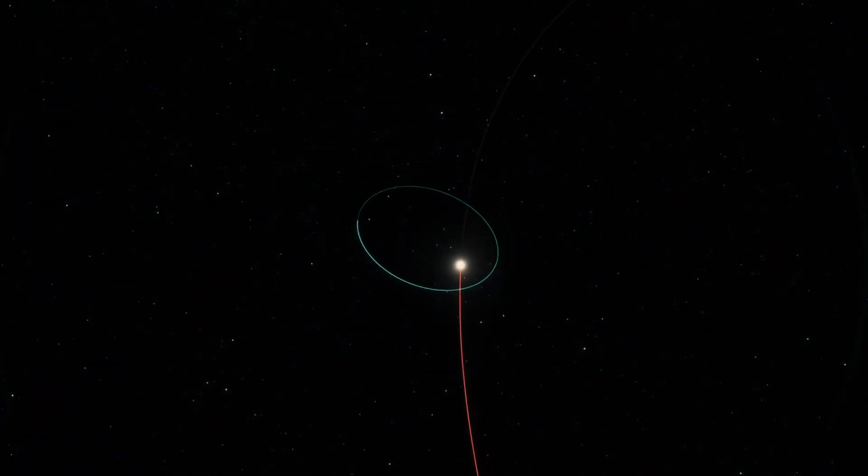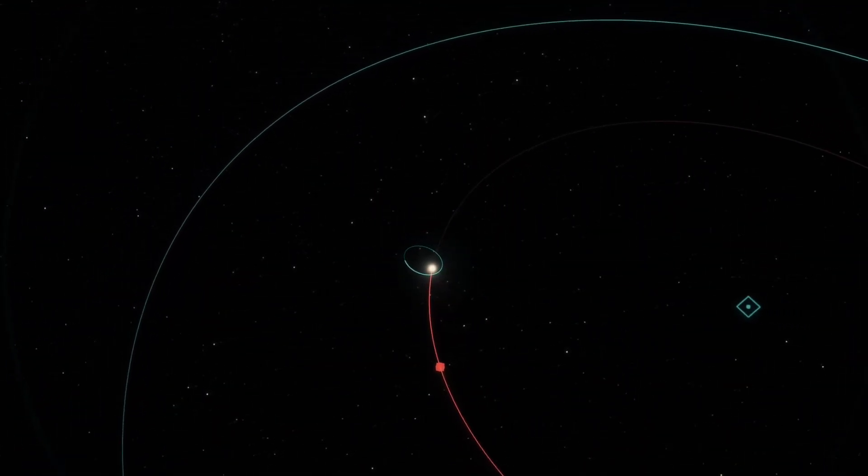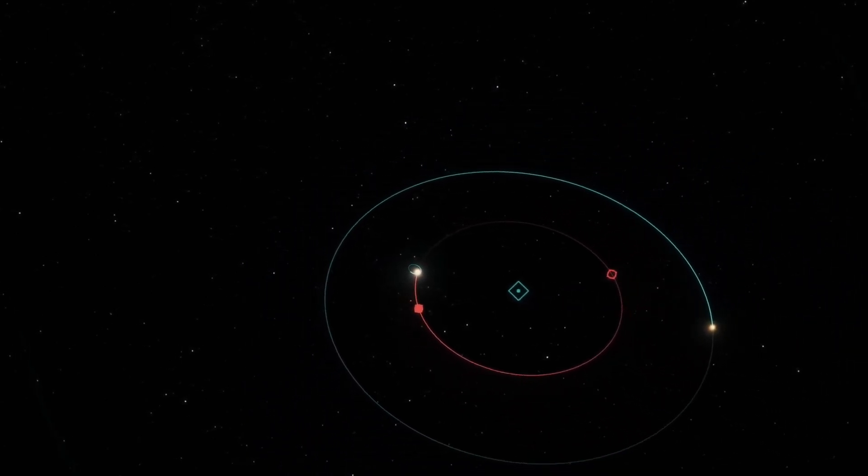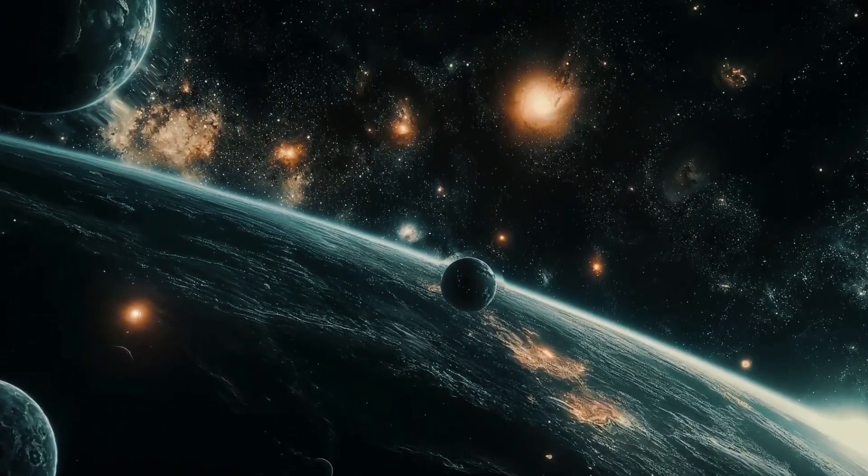Why? Because once three, or more, objects are interacting through gravity, their orbits can become wildly unpredictable. This leads to chaotic orbits.